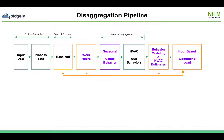Later, a three-stage behavior segmentation is done for seasonal HVAC appliances. This is implemented by a Gaussian mixture model for getting the broad usage behavior, and DBSCAN for getting the sub-behaviors for regression models. Work hours and regression models help in estimating the business site operations-related load.